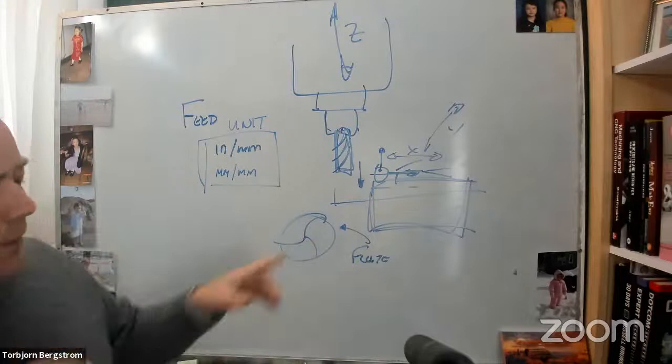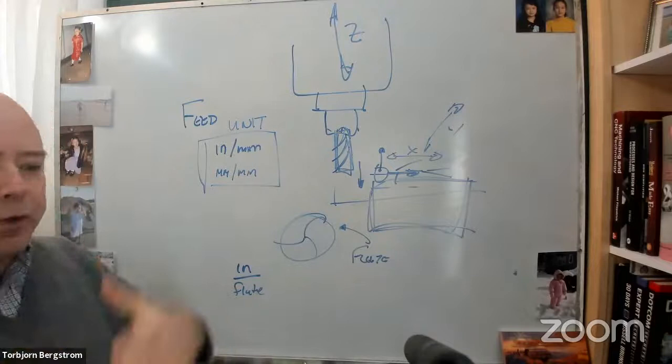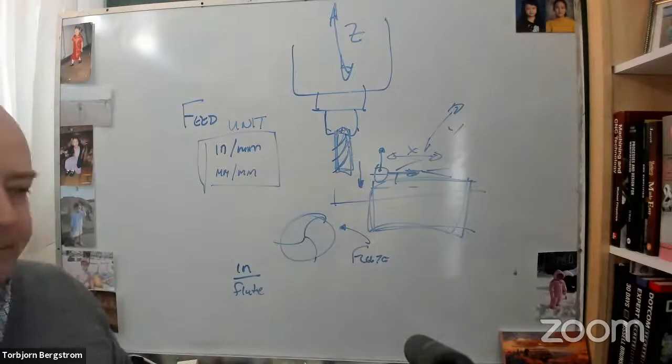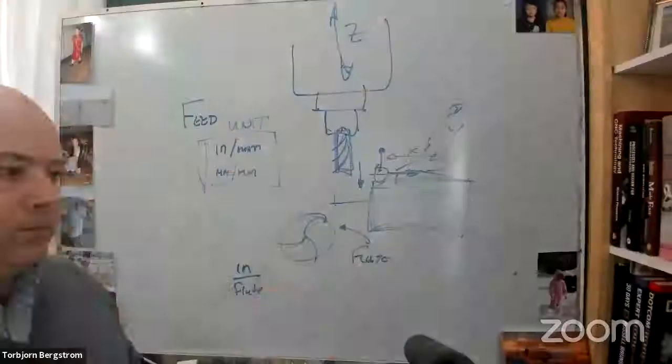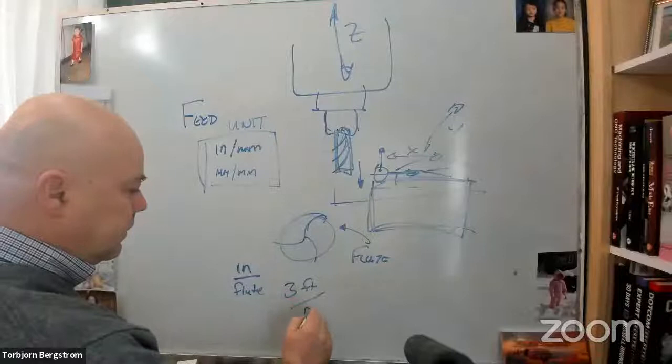Each flute represents a cutting edge. So if we did inches per flute, and we'll say inches per tooth interchangeably. If we said inches per flute, how many flutes interact with the tool per revolution? Three in this case. So here we've got three flutes. So there's three flutes per revolution.